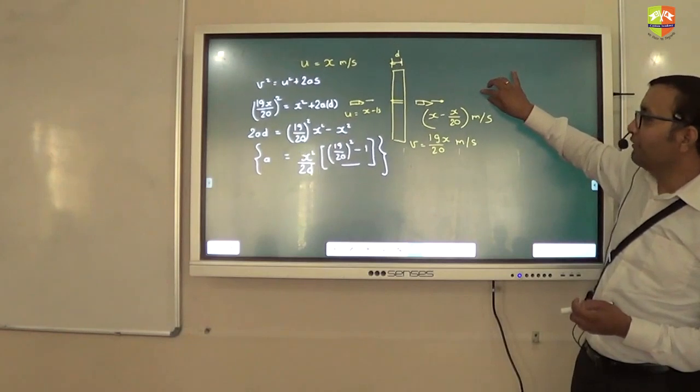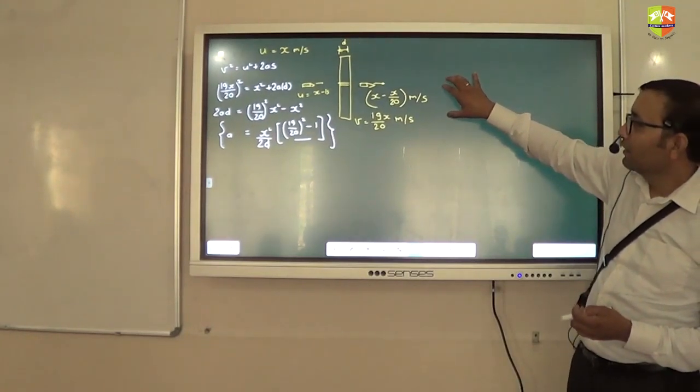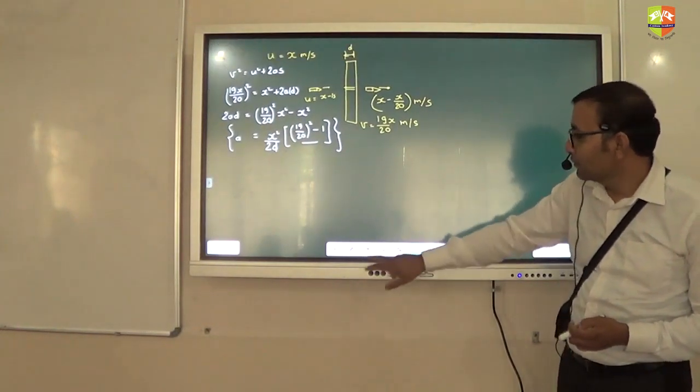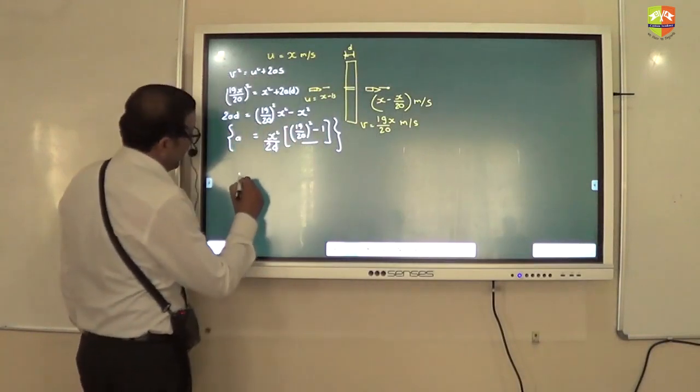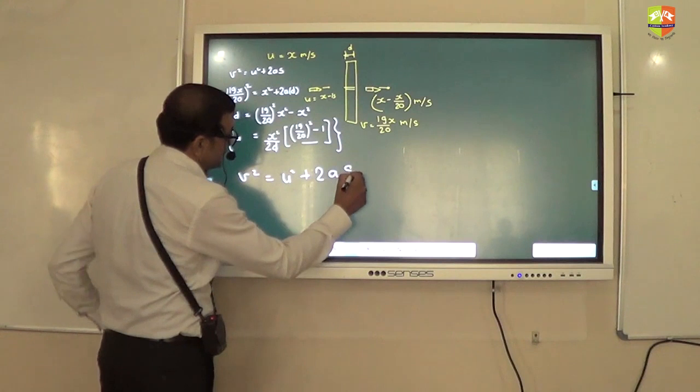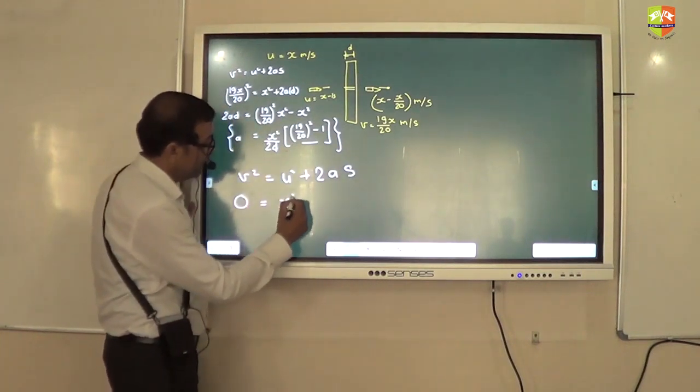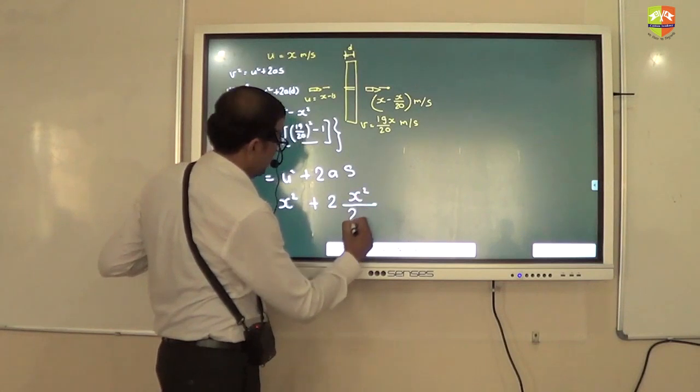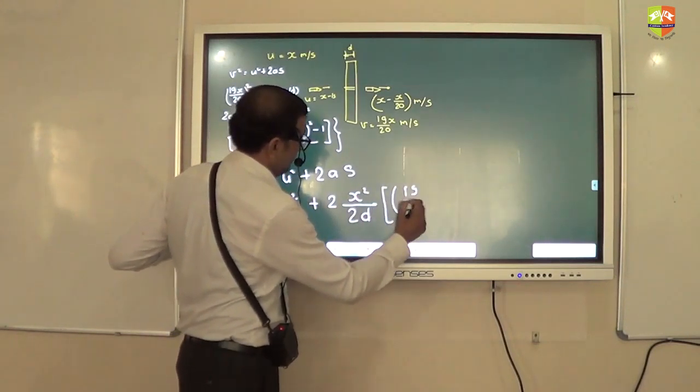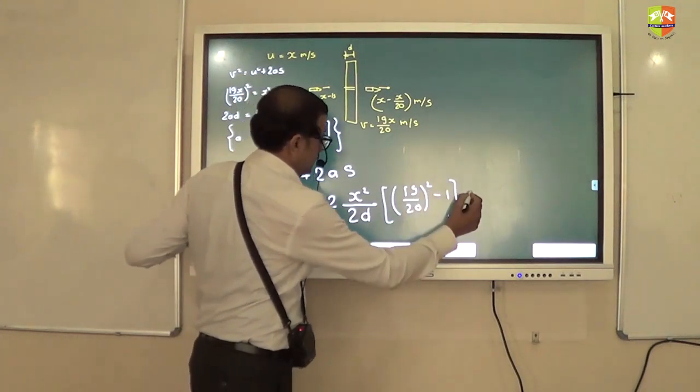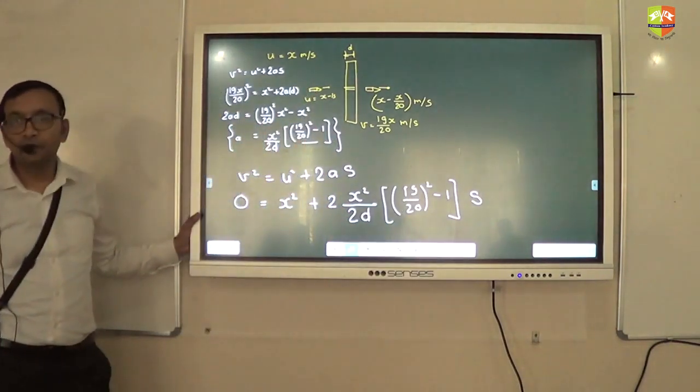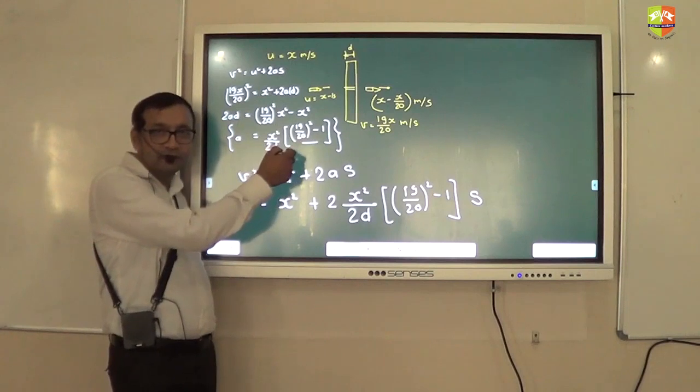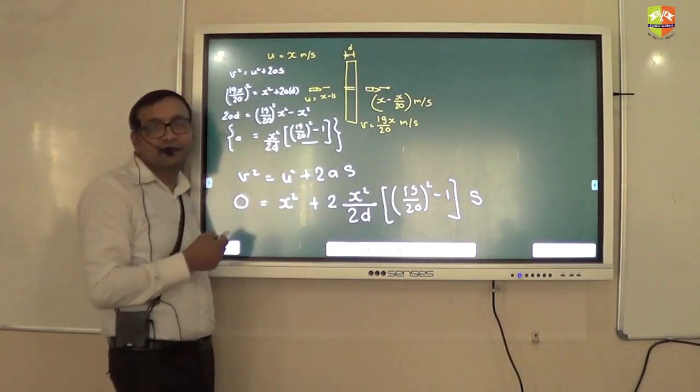See the last few questions are difficult. I can understand. Fine. Now I will be using v square equal to u square plus 2as. Again. V is 0. U is x square. And a is this. So 2a. 2 times x square by 2d. This into s. Any doubts? See I am just following whatever is coming. Okay? There is nothing. You may feel that it looks little bit involved in so many brackets and things. But then.